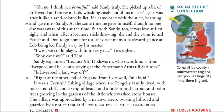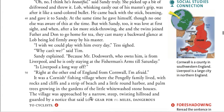So it gives us a look here — Liverpool in England is here, and apparently they live in Cornwall, which is down here. It's over 100 miles. That's something to keep in mind. Right at the corner end of England. It was a Cornish fishing village where the Pingeli family lived, with rocks and cliffs and a strip of beach, a little round harbor, and palm trees growing in the gardens of the little whitewashed stone houses. The village was approached by a narrow, steep, and twisting hill road, and guarded by a notice that said: 'Low gear for one and a half miles, dangerous to cyclists.'